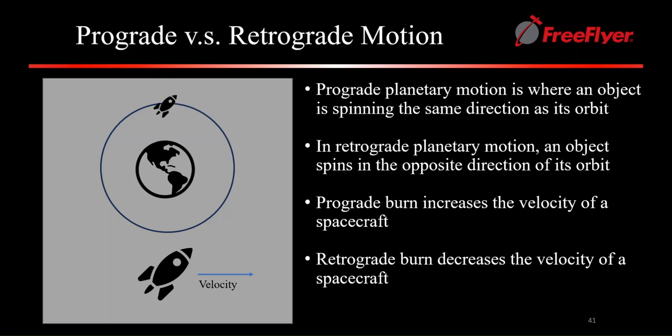A prograde burn will move a spacecraft in the direction it is going and can make an orbit bigger as it increases the velocity. While a retrograde burn is in the opposite direction, thus decreasing the velocity of the spacecraft and decreasing the size of the orbit.